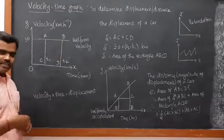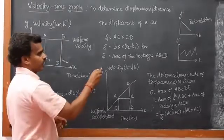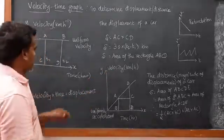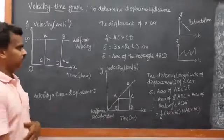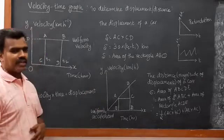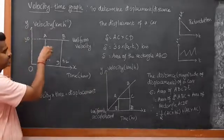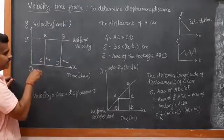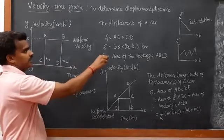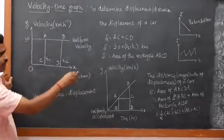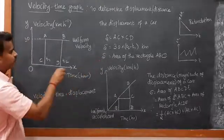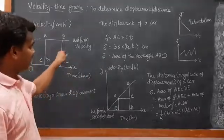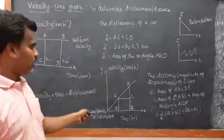So the distance S equals 30 multiplied by (t2 minus t1), which gives the answer in kilometers. From the graph we can identify that S is equal to the area of rectangle ABCD. The area is length times breadth — AC into CD — and from that you can find the displacement or distance of the car. This is the case for uniform velocity, but now we are moving on to accelerated motion.